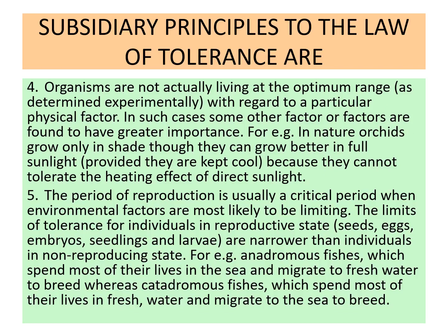Organisms are not actually living at the optimum range of just one factor — many factors together are responsible for the survival of the organism. For example, in nature orchids grow only in shade. They can actually grow well in full sunlight too, but they are normally growing in the shade. Why? Because they require cool temperature; only if they are kept cool can they grow in full sunlight. So sunlight, shade, and temperature all play together for the survival of that individual.